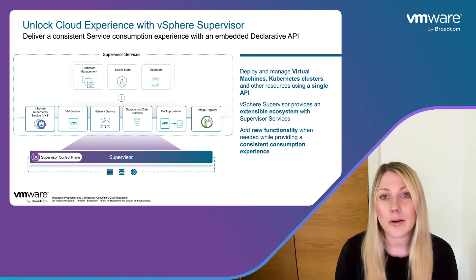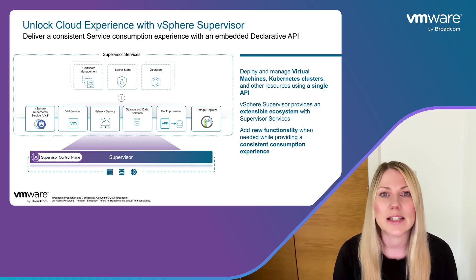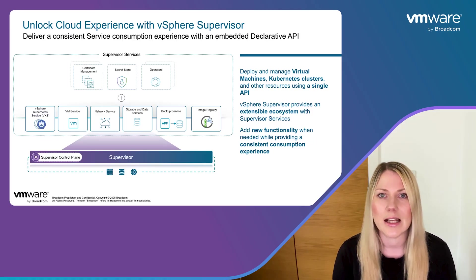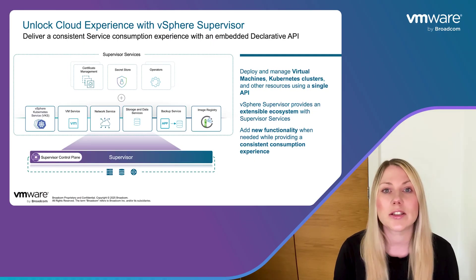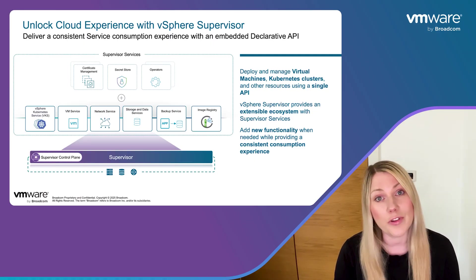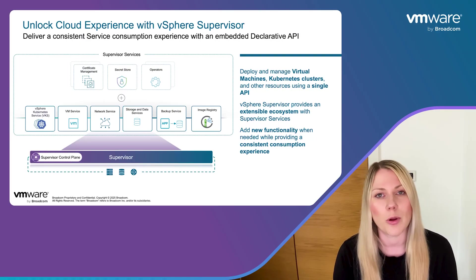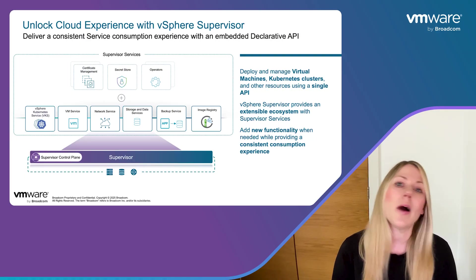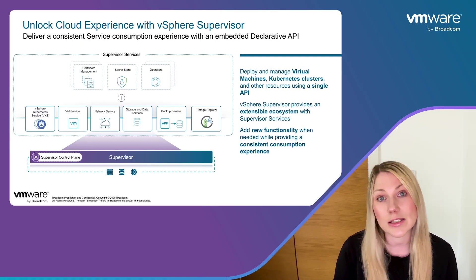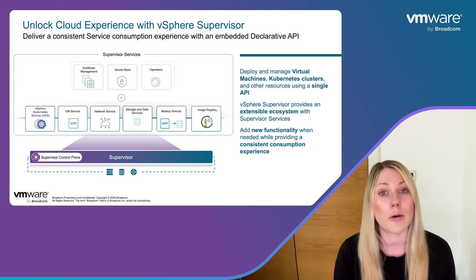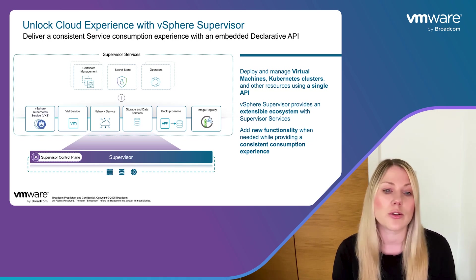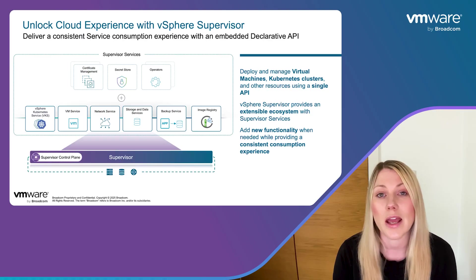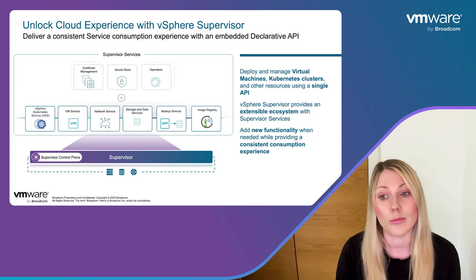On enablement, we provide our customers with a set of core supervisor services. For example, VKS — our vSphere Kubernetes service — to allow them to deploy Kubernetes clusters, or VM service, allowing them to deploy virtual machines, but also other services such as network service to allow them to deploy load balancers on demand, or storage service to allow them to create persistent volumes on demand.